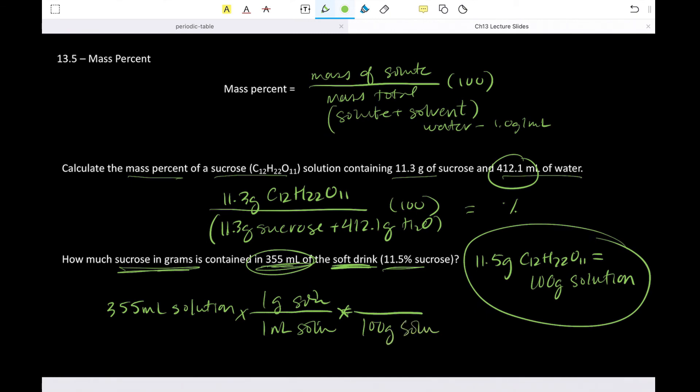There are 11.5 grams of sucrose. And then my grams of solution cancel, volume of solution cancels. And I have now calculated how many grams of sucrose are contained in that amount of my soft drink. All right.